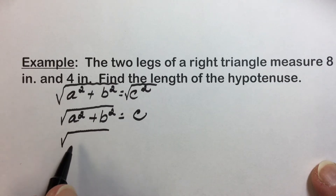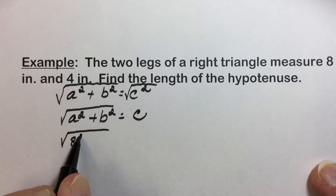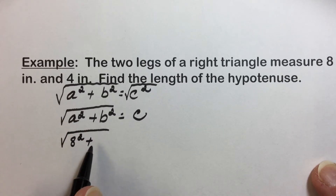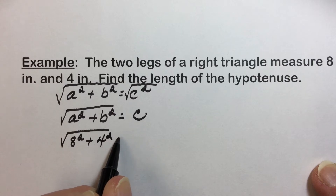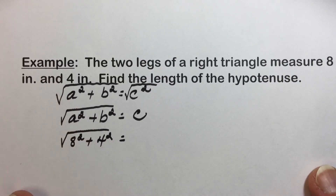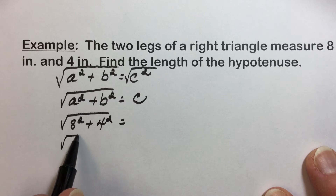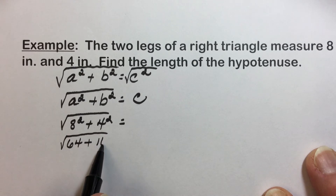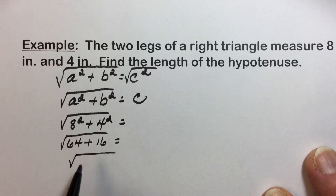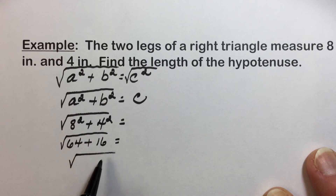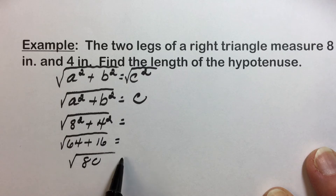Here we have leg lengths of 8, which we'll place in place of A, and another leg length of 4. Simplifying, we'll take care of squaring first: 8 squared is 64, 4 squared is 16. Taking the sum of those two, we now have the square root of 80 equal to C.